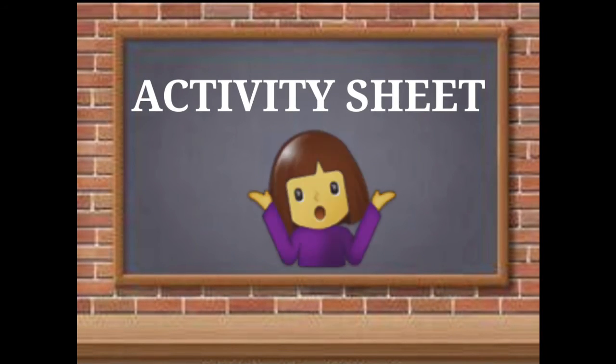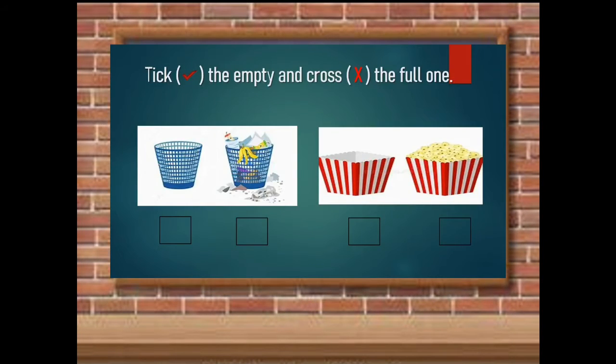For our activity sheet, tick the empty and cross out the full one. First is we have trash bin. Tick the empty trash bin, meaning you don't see anything in it.